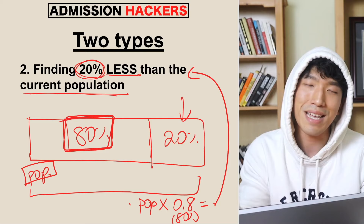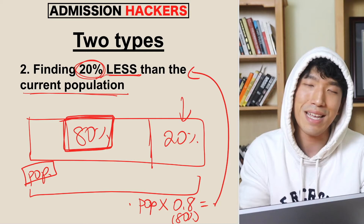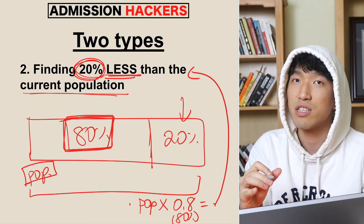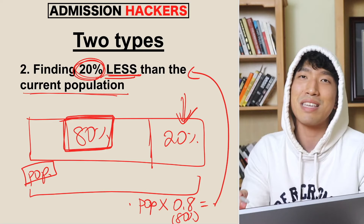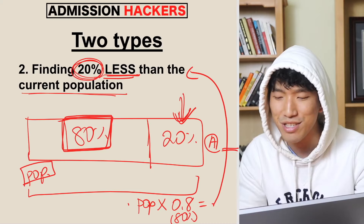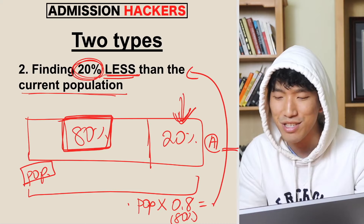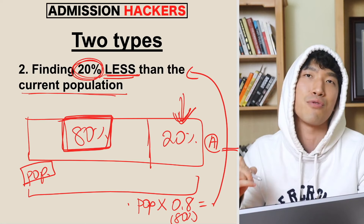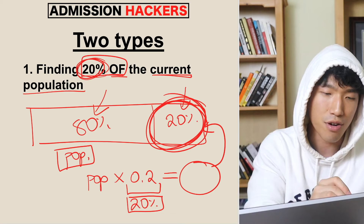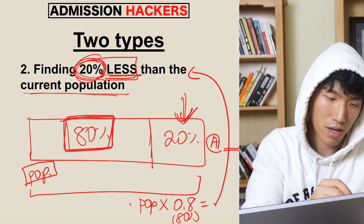What most people end up doing is they see '20% less' and don't fully understand what it means, so they just find the 20% and put that as the answer. The ridiculous thing is the SAT knows people do that all the time, so they put that 20% value as choice A — it looks like you found the right answer, you see it first, and you pick it. That's the trap the SAT has set up. So make sure you know the difference between finding 20% of something versus finding 20% less than something.